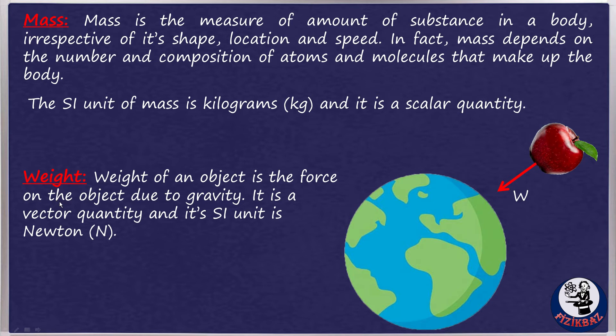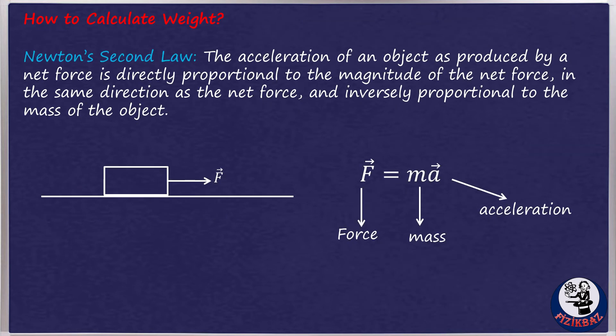Weight of an object is the force on the object due to gravity. It's a vector quantity and its SI unit is Newton. If it's a vector quantity, then what is its direction? We just learned that it is the pull of gravity, so definitely the direction is downwards—I mean, towards the center of Earth. Before we learn to calculate the weight, let's review Newton's second law.